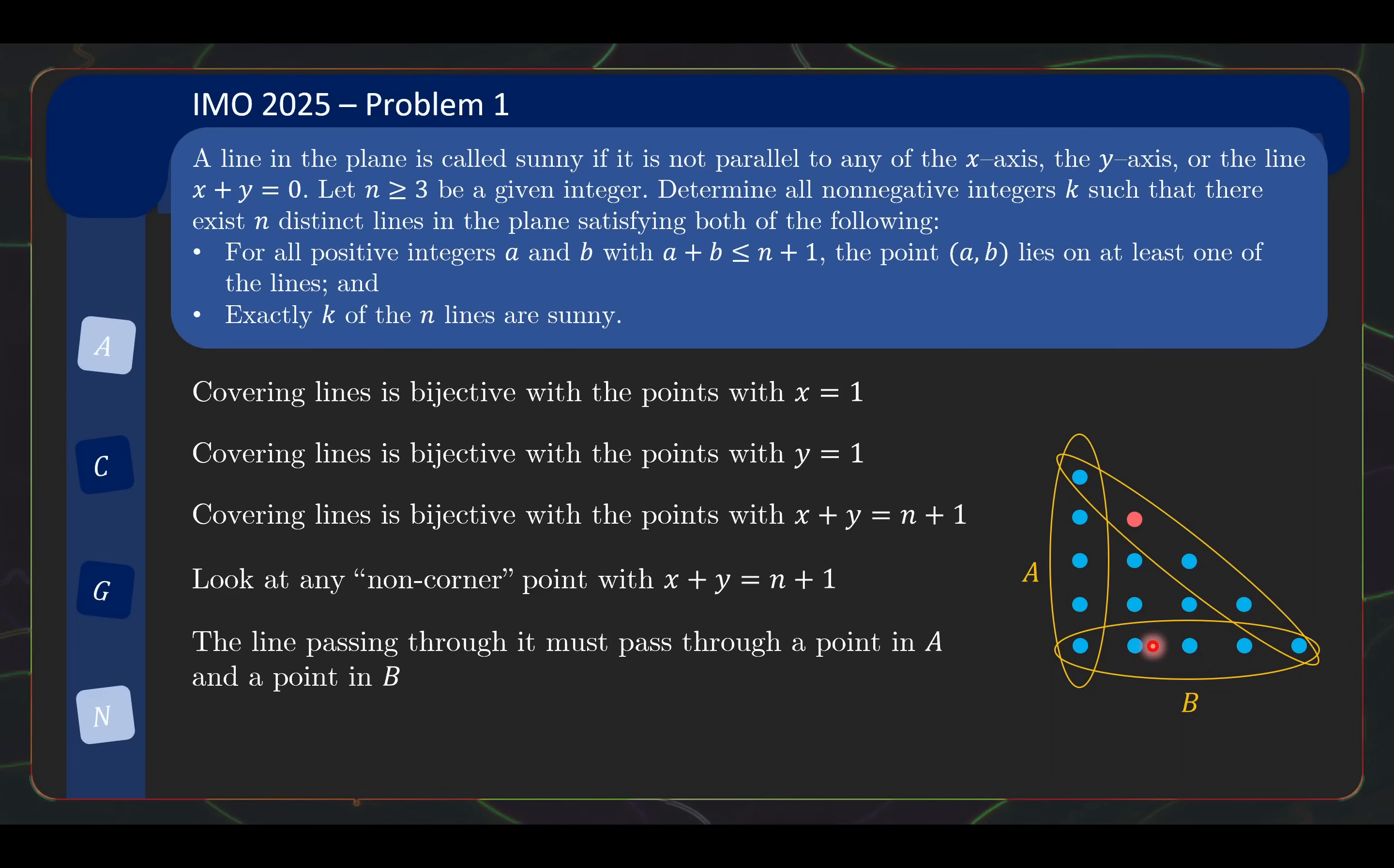Now, the covering line that passes through it is a certain line L, right? The covering lines are all in bijective with points in A. So L must also pass through one of the points in A. Can it be this point over here at the corner? No, because lines are in bijective with the points in this set. And since L passes through this non-corner point, it cannot pass through this point. So L must pass through one of these other points here. Same thing, L must pass through one of these options and one of these options.